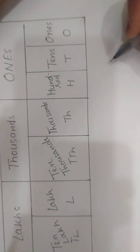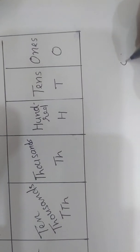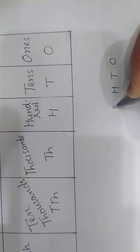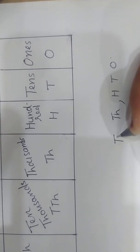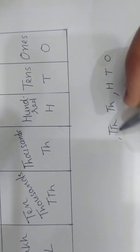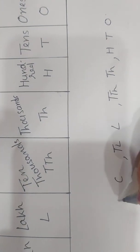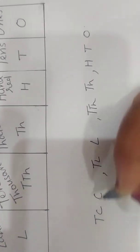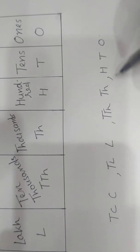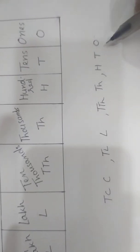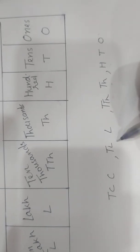We use a comma to separate the periods. Start from the right: ones, tens, hundreds — then comma — thousands, ten thousands — then comma — lakhs, ten lakhs — then comma — crores, ten crores. Group the digits first in three, then two, two, two.